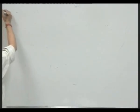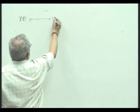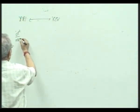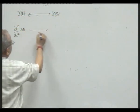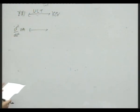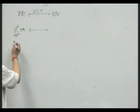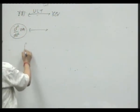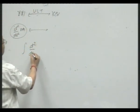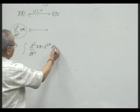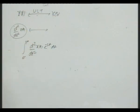Next, if the one-sided Laplace transform of the signal x(t) is X(s), then what would be the one-sided Laplace transform of the second derivative of x? This is the unilateral Laplace transform. By applying the unilateral Laplace transform definition to this signal, the signal here is d²x/dt² times e^(−st) dt.